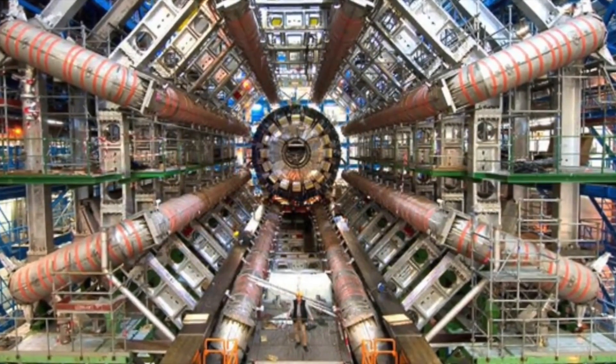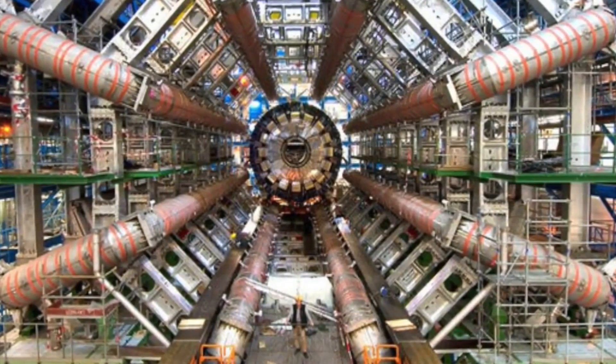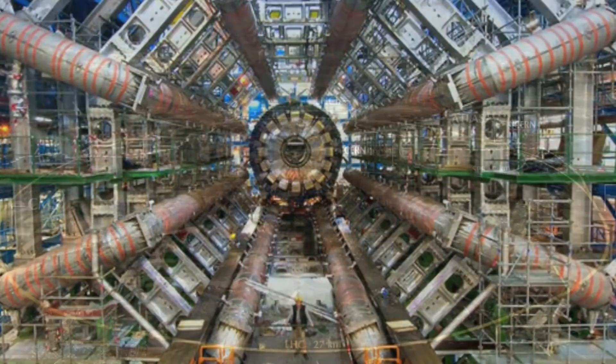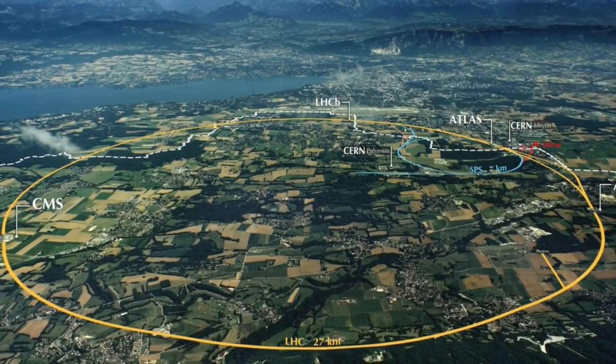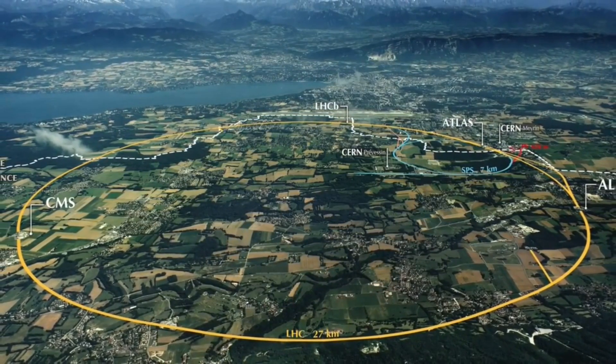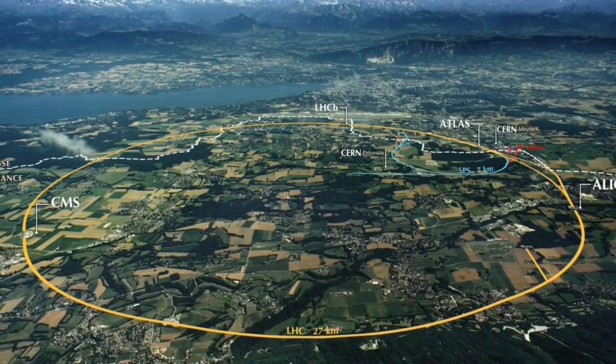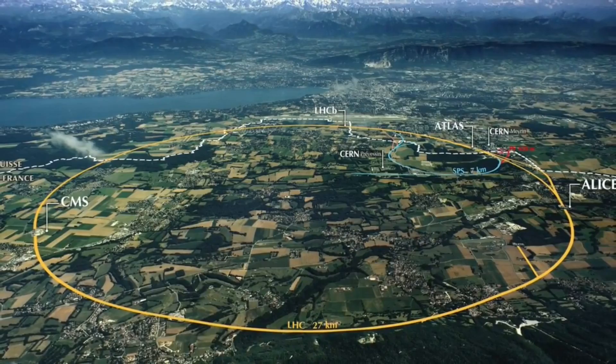At first, physicists described these forces as separate from one another, but researchers later realized they are two components of the same force. The electric component acts between charged particles, whether they are moving or stationary, creating a field by which the charges can influence each other. But once set into motion, those charged particles begin to display the second component, the magnetic force. The particles create a magnetic field around them as they move.